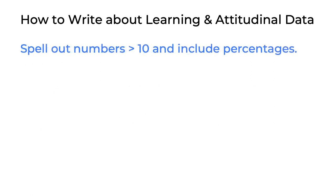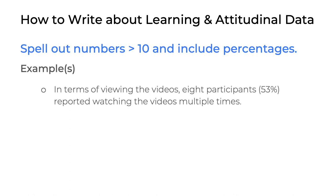We also want to remind you that per APA style, you need to: one, spell out numbers less than 10, and two, do the math for your readers by including percentages in your sentences. For example: 'In terms of viewing the videos, eight participants, or 53%, reported watching the videos multiple times.' The number eight is spelled out because it is less than 10, and eight out of 15 participants is 53%. Providing both the raw count and the percent makes it easy for readers.